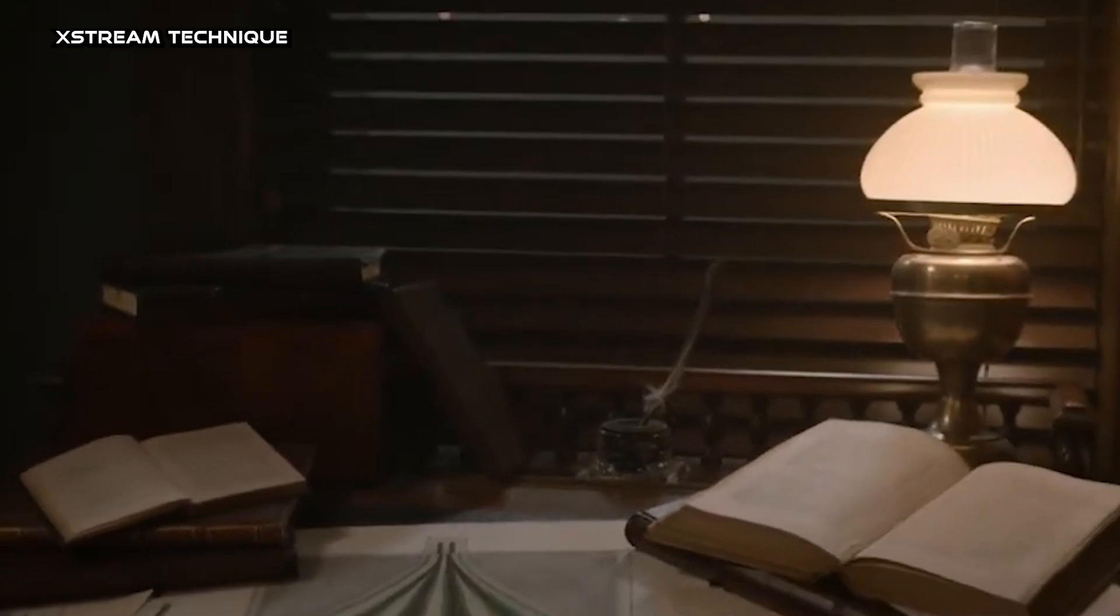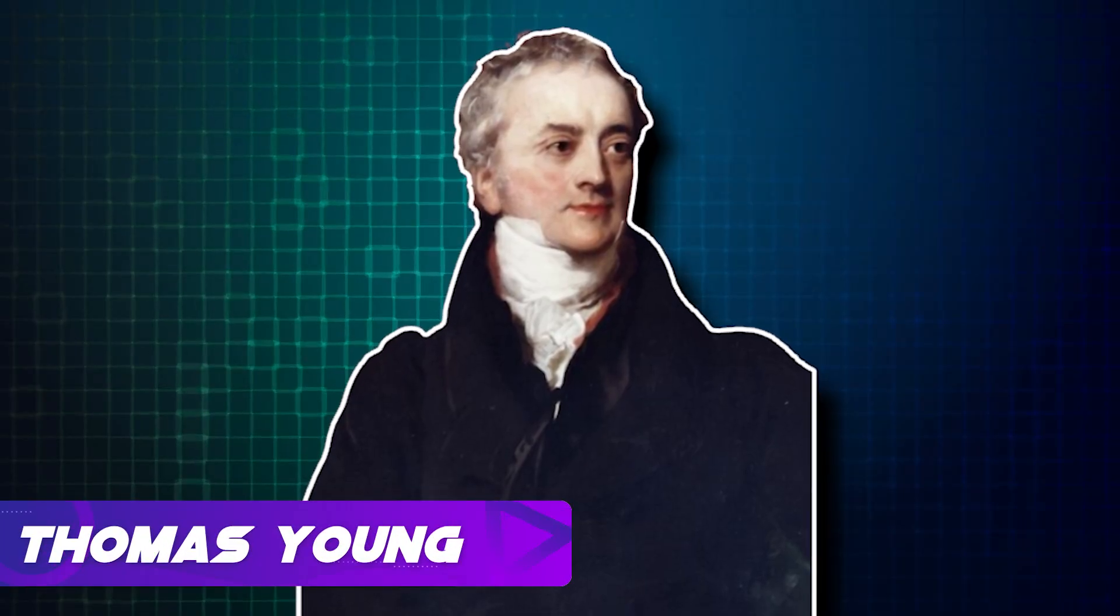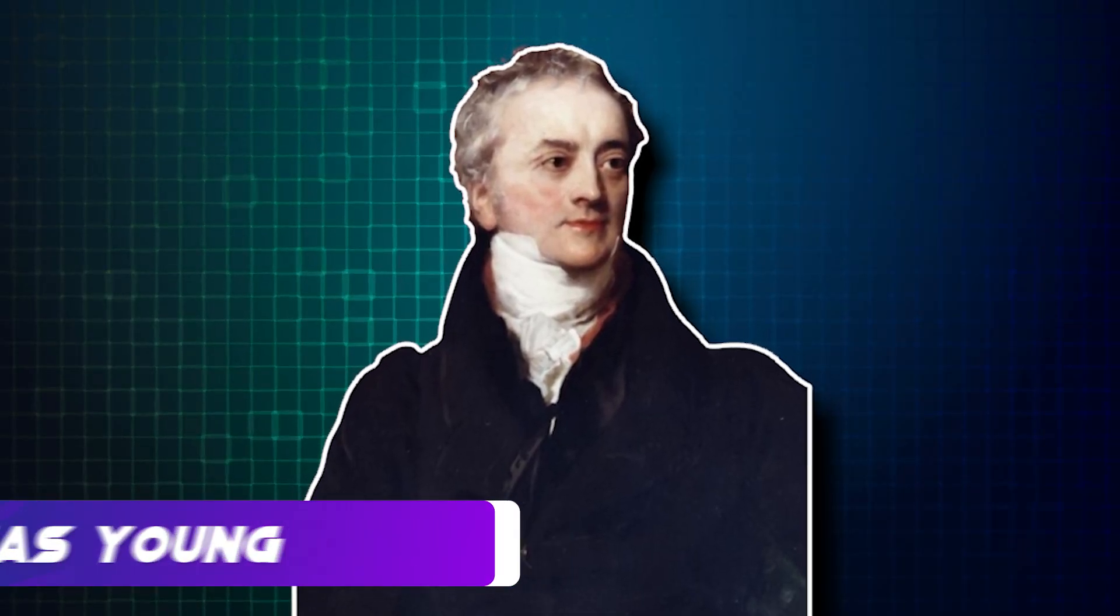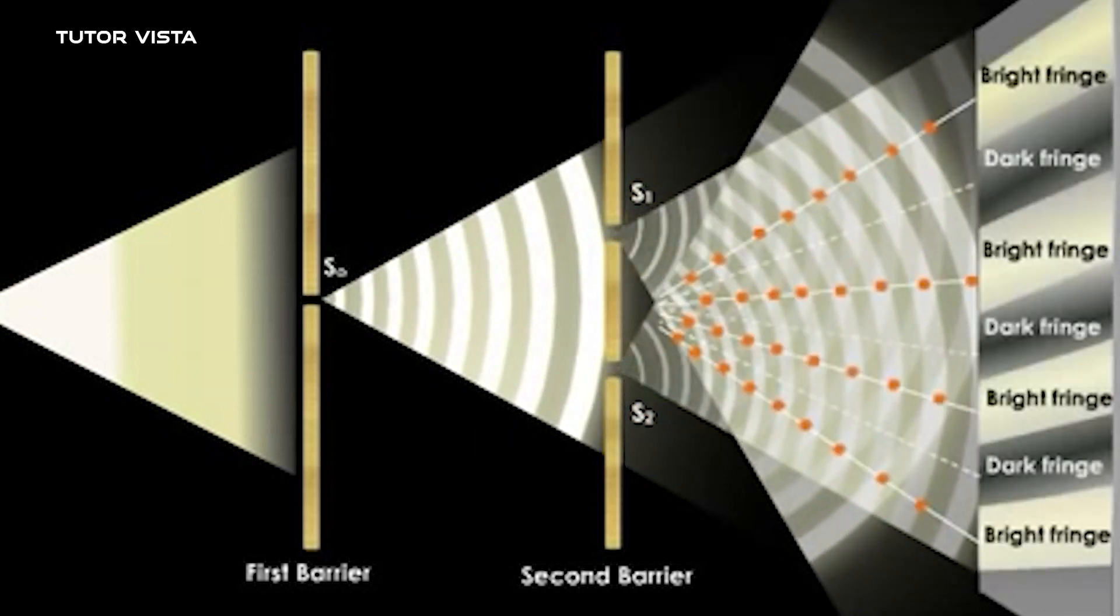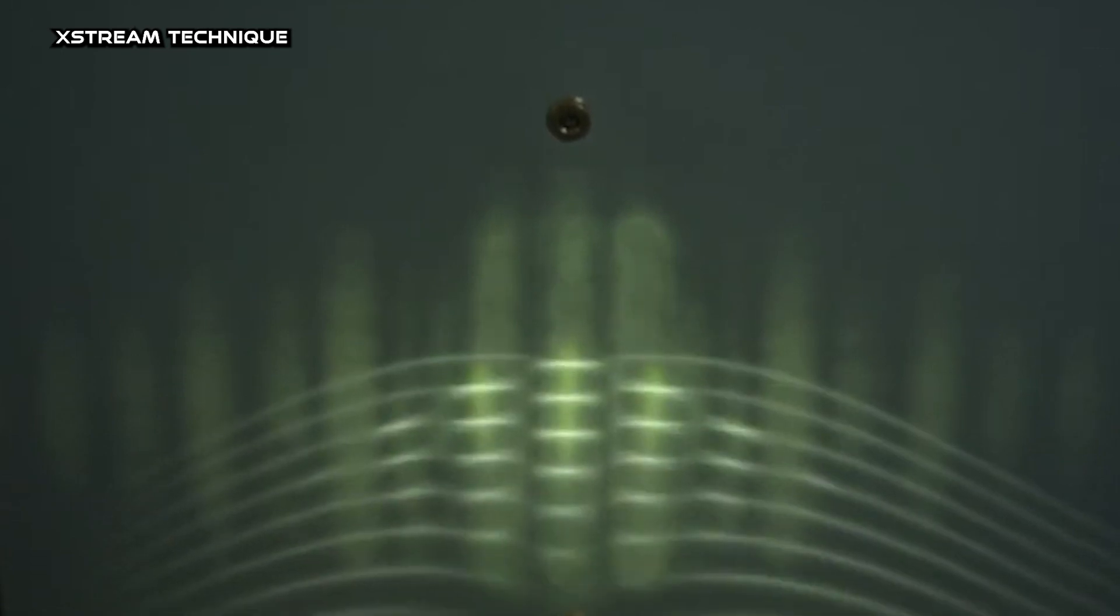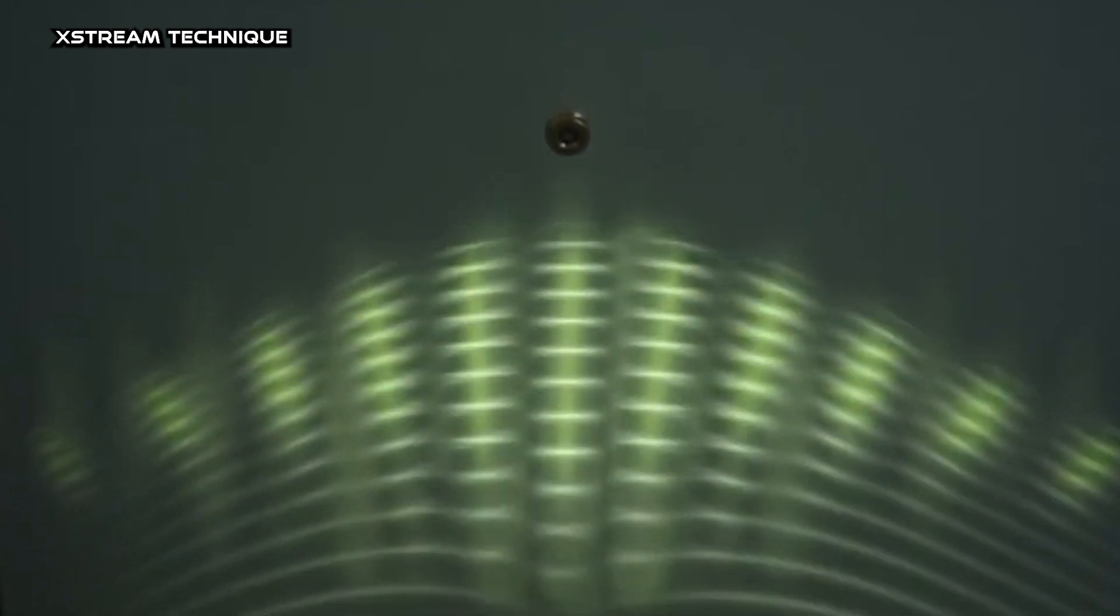In 1801, a scientist named Thomas Young conducted an experiment with two slits and light. By doing so, he showed that light acts like waves, which was a huge deal at the time. Before that, people mostly thought of light as just tiny particles, but Young's experiment changed how we see and understand light.